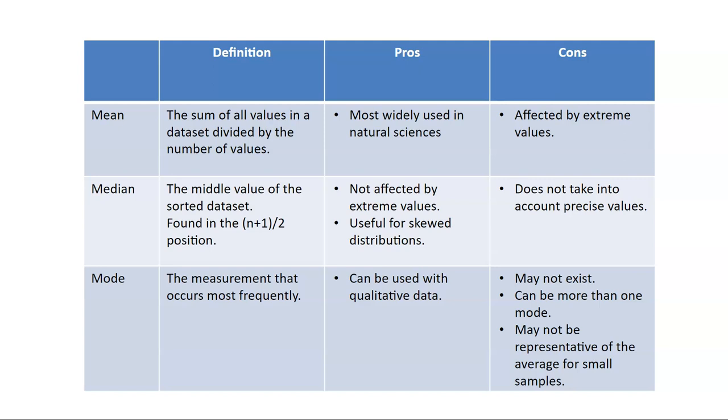An alternative to measure central tendency is the mode. What's the measurement that occurs most frequently? This is really popular a lot with qualitative data, so not necessarily numbers but categories of things.